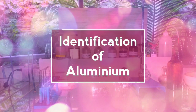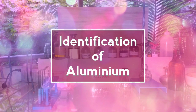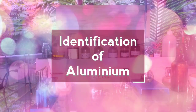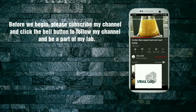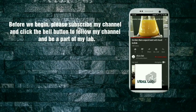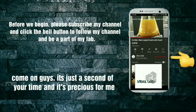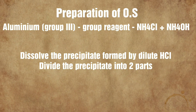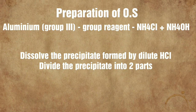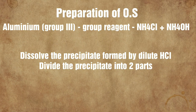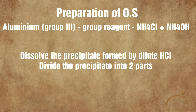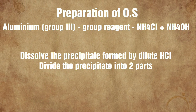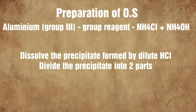Friends, today we would be doing the identification of Aluminium Ion. Aluminium belongs to group 3 and the group reagent is Ammonium Chloride and Ammonium Hydroxide.